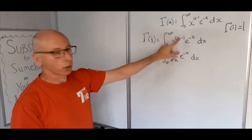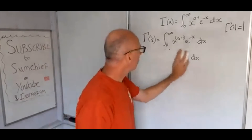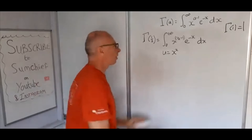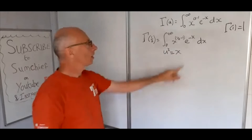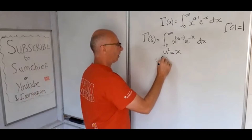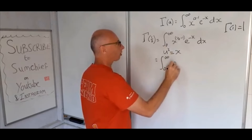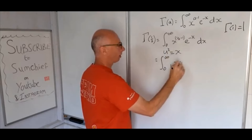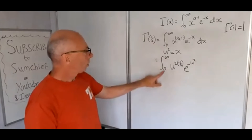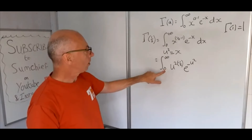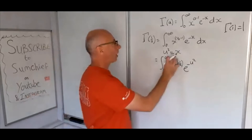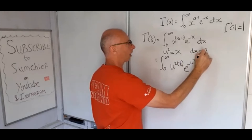We use the substitution u squared equals x, so x becomes u squared and dx equals 2u du. The limits stay the same: when x is 0, u is 0, and infinity remains infinity. Substituting in, x to the minus one half becomes u squared to the minus one half, and e to the minus x becomes e to the minus u squared. Multiplying out, u squared to the minus one half gives u to the minus 1, which is 1 over u. Combined with the 2u from dx, the u terms cancel, leaving 2 times the integral from 0 to infinity of e to the minus u squared du.